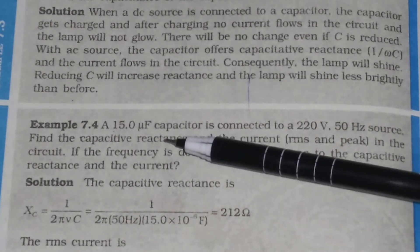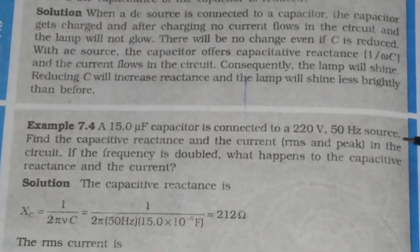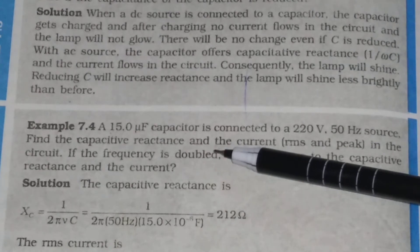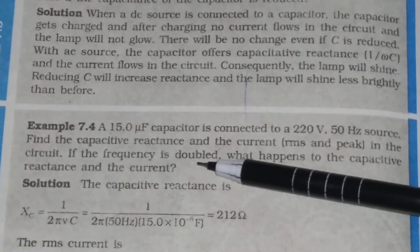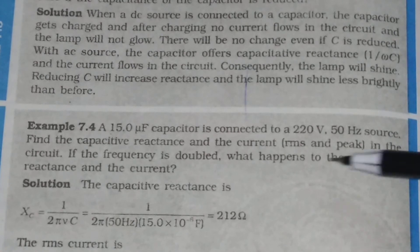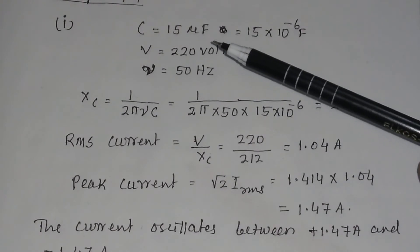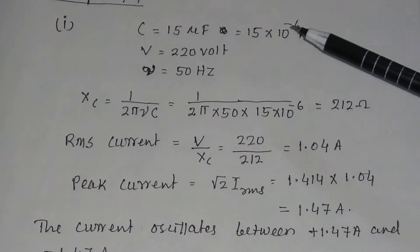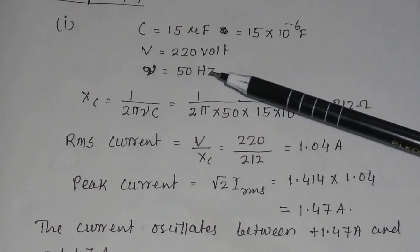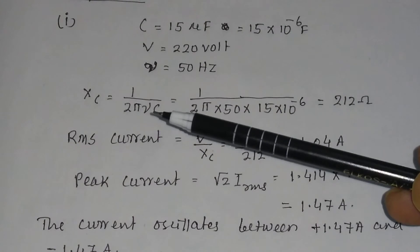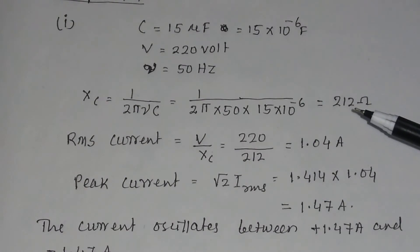Now let us discuss another problem. A 15 microfarad capacitor is connected to a 220 volt, 50 Hz source. Find the capacitive reactance, the RMS current, and the peak current in the circuit. The capacitance is 15 microfarad = 15 × 10⁻⁶ F, voltage is 220 V, and frequency is 50 Hz. The capacitive reactance Xc = 1/(2πνC). Substituting these values, the capacitive reactance is equal to 212 Ohm.